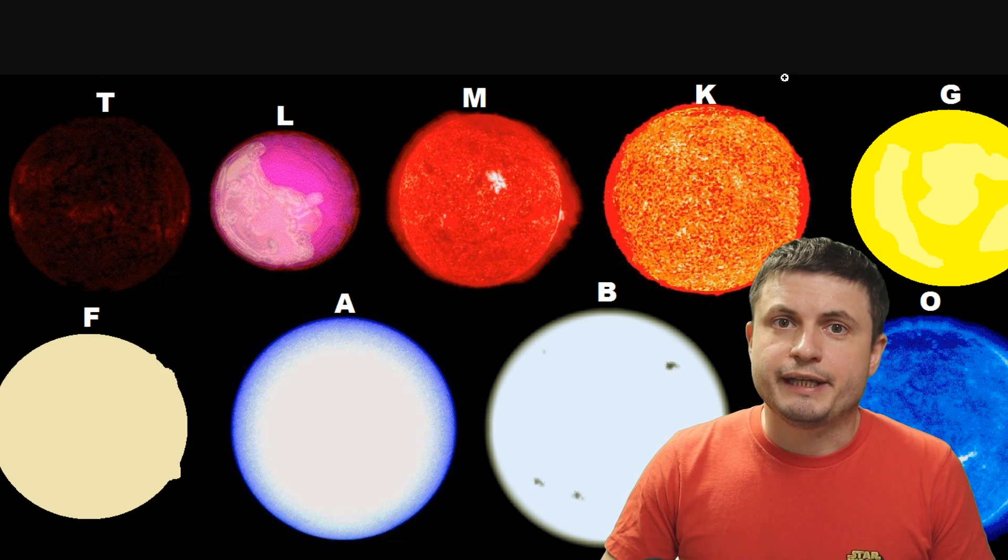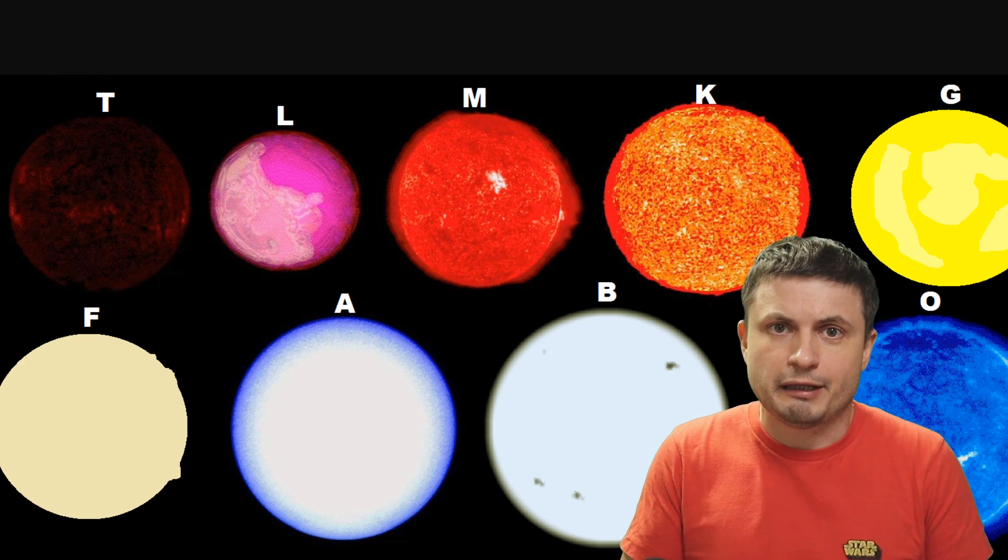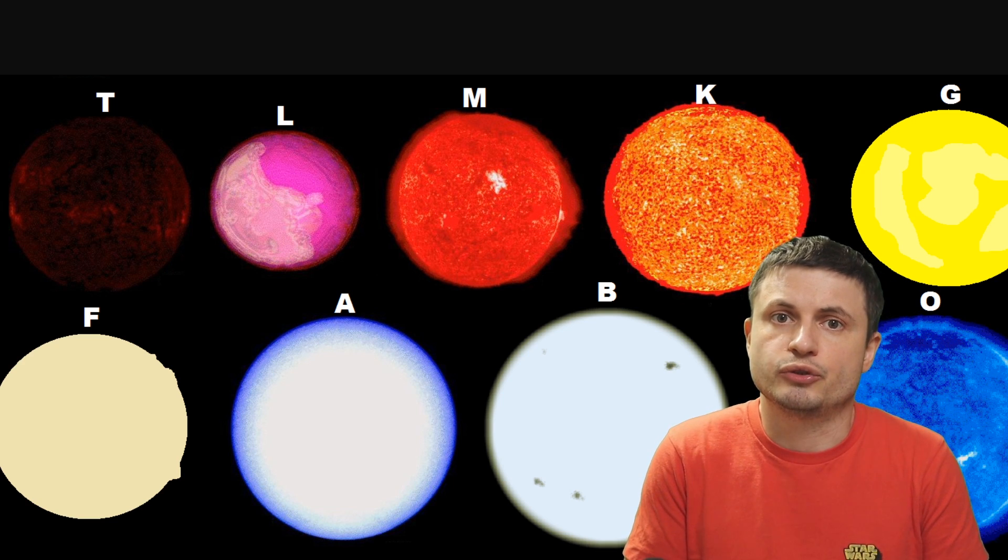But the last three types, the K-type, the G-type and the F-type stars do have a very high chance of being stable enough and also having long enough lives for habitable planets to form around them.